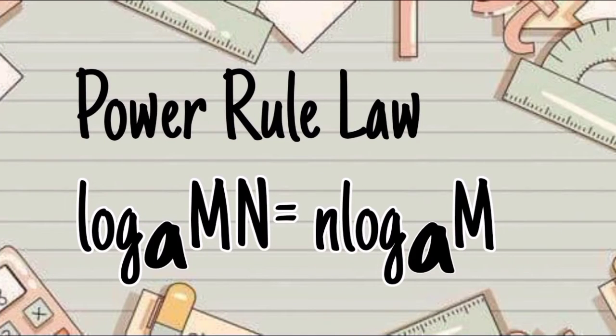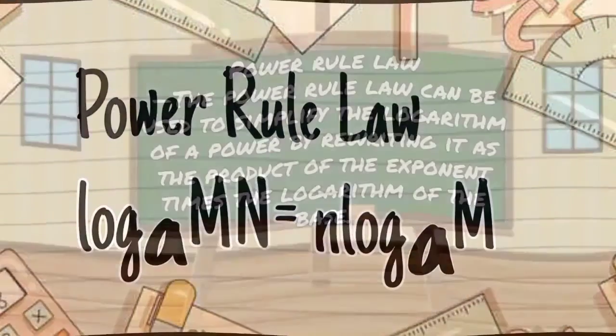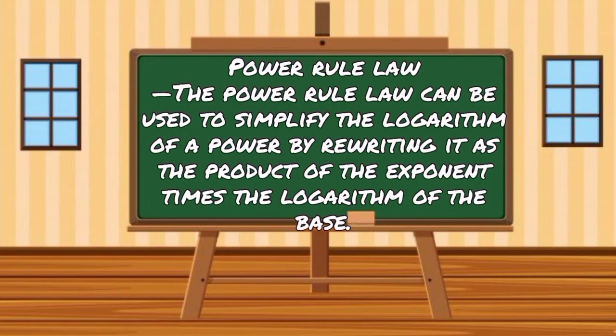Power rule law: Logarithm m^n with base a equals n logarithm m with base a. A power rule law can be used to simplify the logarithm of a power by rewriting it as a product of the exponent times the logarithm of the base.